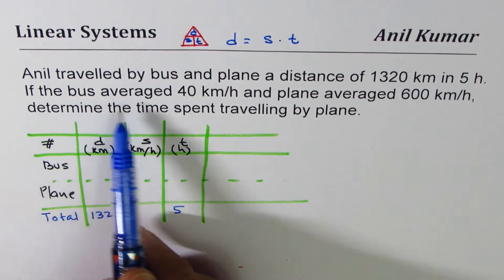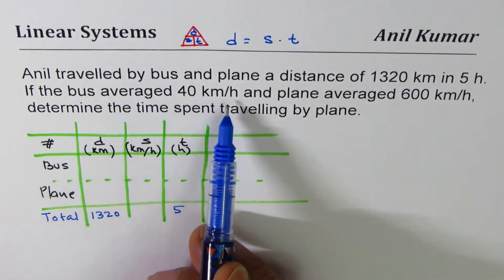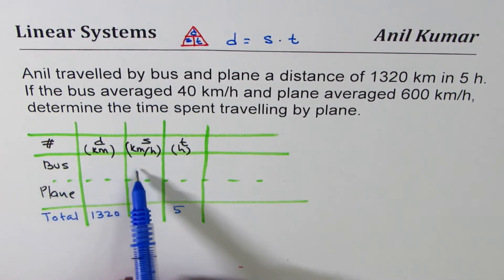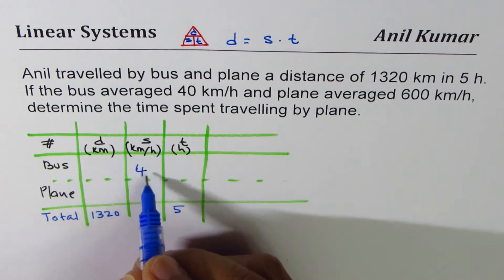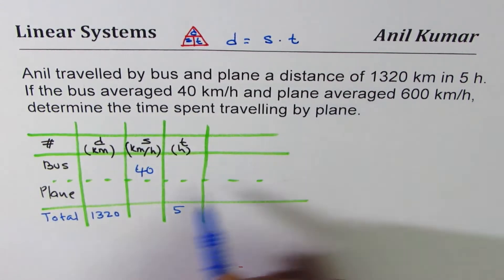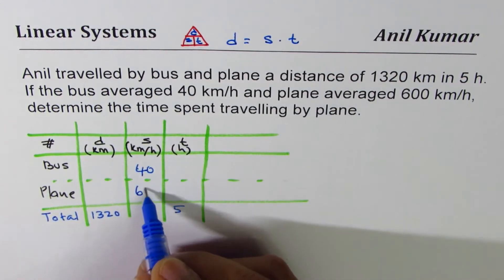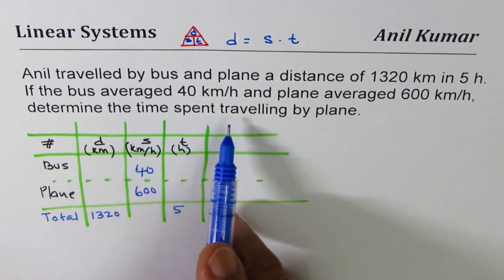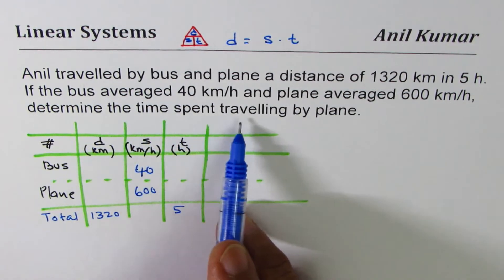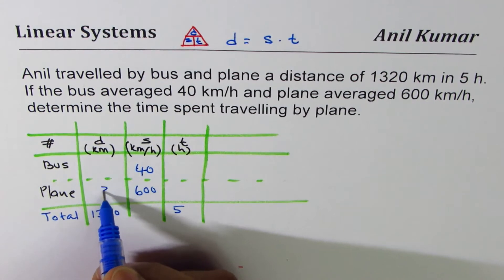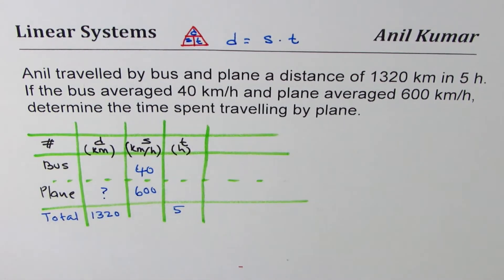The bus averaged 40 kilometers per hour — that's the speed for bus — and the plane averaged 600 kilometers per hour. We need to determine the time spent traveling by plane, so we have to find that time value.